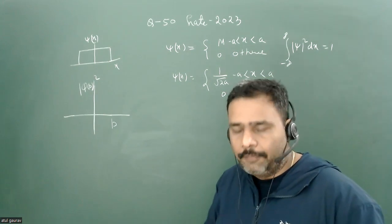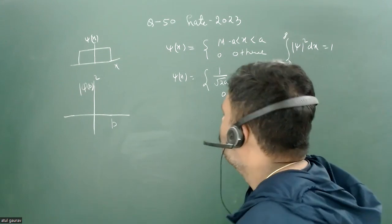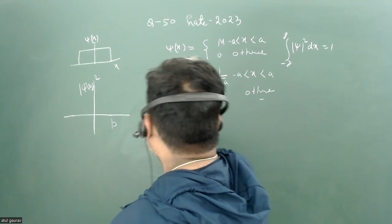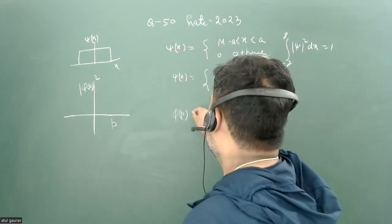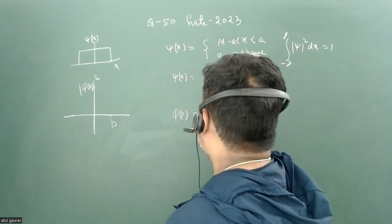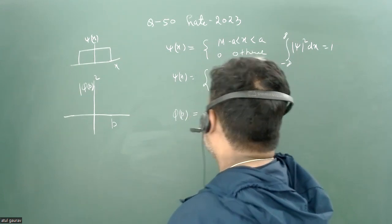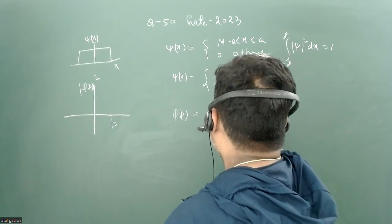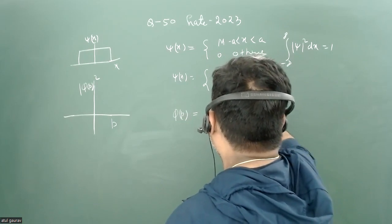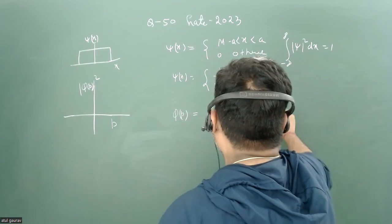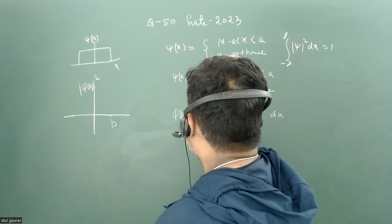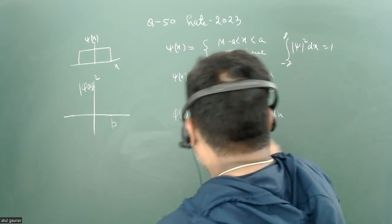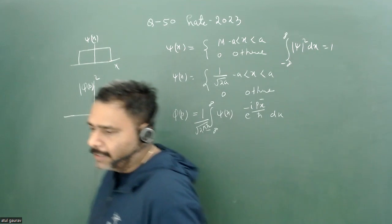Now we write the wave function in momentum space. The momentum space wave function φ(p) goes from minus infinity to plus infinity as the integral of ψ(x) times e^(−ipx/ℏ) dx, with a prefactor of 1/√(2πℏ) to make the thing dimensionally correct.